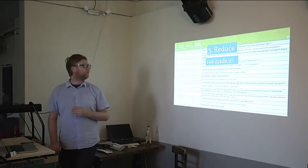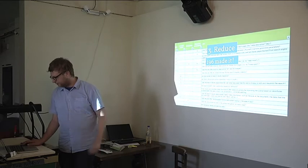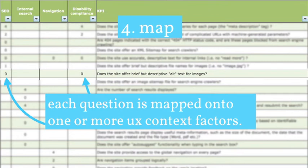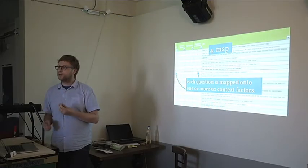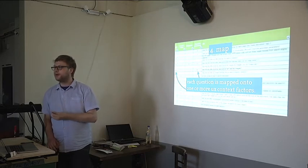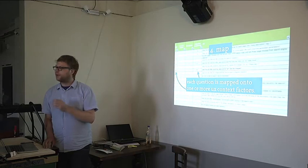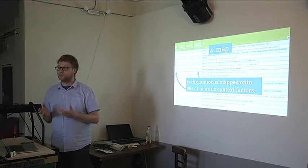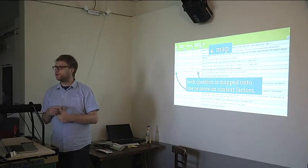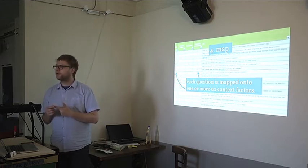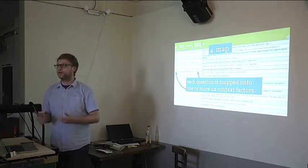The next phase was really to map it. Each question is mapped onto one or more UX context factors. Instead of a formal checklist with a category and subcategory, I really want to turn things around. For example, in HTML it's possible to define an alt tag on an image which should describe the image. If you do that or you don't, it has an influence on both the SEO of your website — which is a findability issue — but it also has influence for disability compliance underneath accessibility. That's the reason why questions are mapped onto one or more user experience context factors.